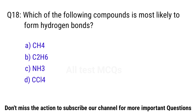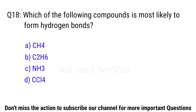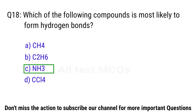Q18. Which of the following compounds is most likely to form hydrogen bonds? The right answer is option C. NH3.